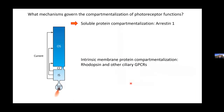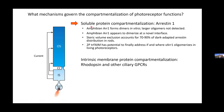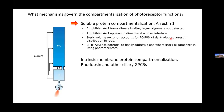To summarize part one: amphibian arrestin-1 forms dimers in vitro but larger oligomers are not detected; amphibian arrestin-1 appears to dimerize at a novel interface different from mammalian; steric volume exclusion can account for most of the arrestin localization in the inner segment of dark-adapted photoreceptors; and we are developing a two-photon time-resolved fluorescence anisotropy microscopy approach to finally address whether arrestin-1 is oligomerized in living photoreceptors.